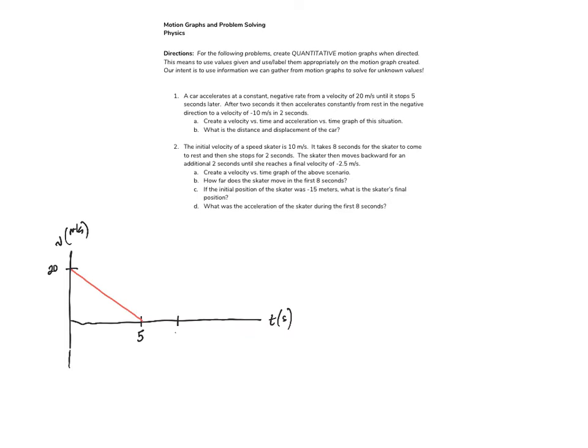Now that object is stopped for two seconds and then it once again negatively accelerates to negative 10 meters per second in those two seconds. So this is the velocity versus time graph that we should have here.